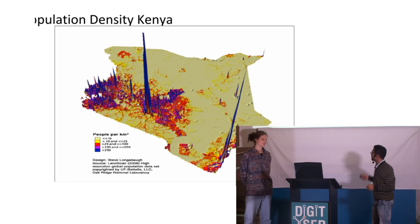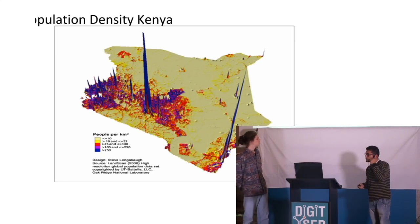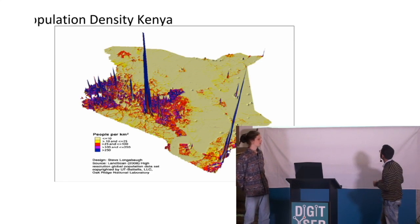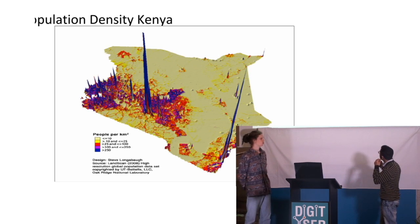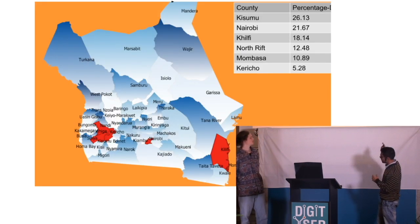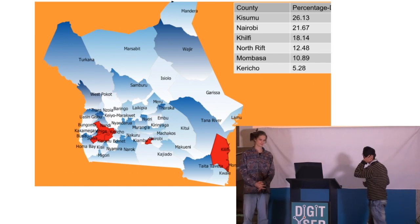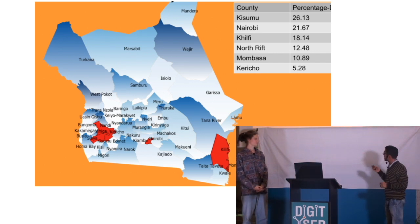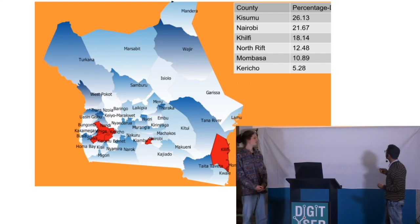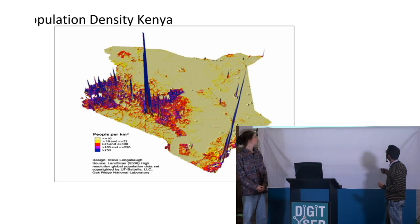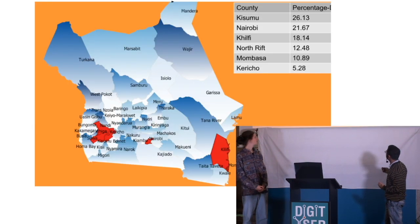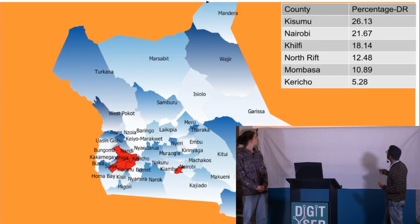This is the population density map, taken from a research website. It shows the mapping of Kenya with the correct locations of places where we got the data from. You can see that the highest density of population is in the center, south, and north. We have data only from Nairobi and mostly the south and north side of the region.